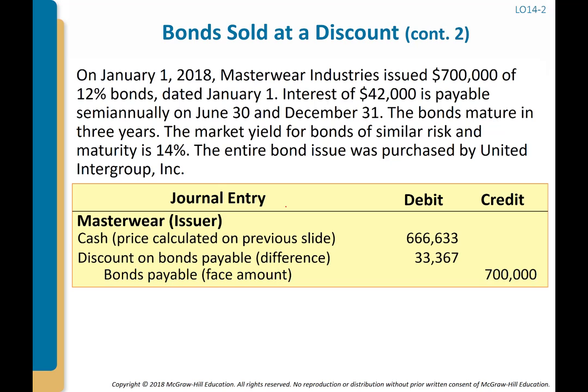On the balance sheet, we show Bond Payable at $700,000, with a discount of $33,367, giving a net carrying value of $666,633 — exactly the cash we received. This is the present value of the bond, which is precisely what we owe right now. The bond is listed at its present value on the balance sheet.